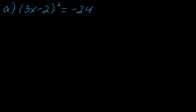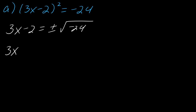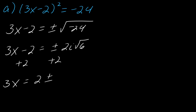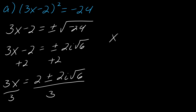This first one is screaming for us to use the square root property because it's already in that form. Taking the square root of each side gives plus or minus the square root of negative 24, which becomes 2i times the square root of 6. Adding 2 to each side gives 3x equals 2 plus or minus 2i times the square root of 6. This is one of those cases where I cannot easily combine the terms further, so my final answer is 2 plus or minus 2i times the square root of 6, all over 3.